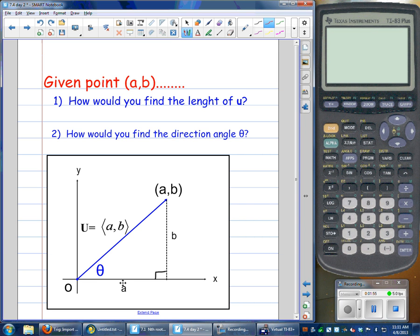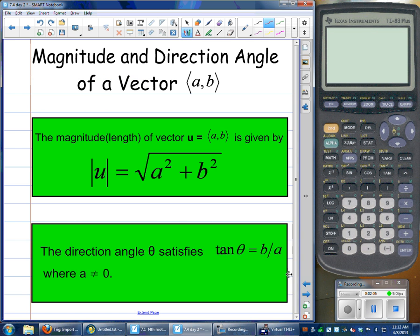Two, how would you find the direction angle? Well, SOHCAHTOA, you know, we're going to know two out of three sides. We could find the third, so if we know all three sides, we could definitely find any missing angle in a right triangle just using SOHCAHTOA.